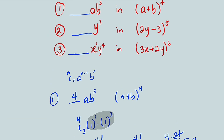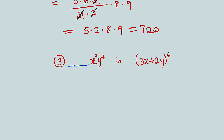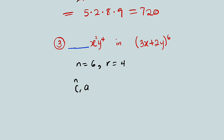The last problem: we want to find the coefficient of x squared y to the fourth power in the expansion of (3x + 2y) to the sixth power. The second term contains y, therefore it is b, and the power of b is r. The power of b here is 4, so r is equal to 4, and n is 6. So we have 6 combination 4, multiplied by the coefficient of a which is 3, raised to the power of 6 minus 4, which is 2.